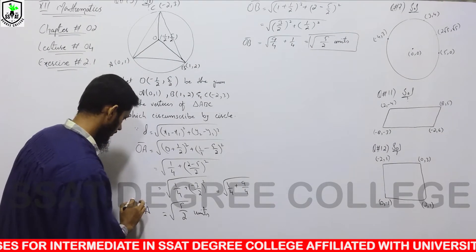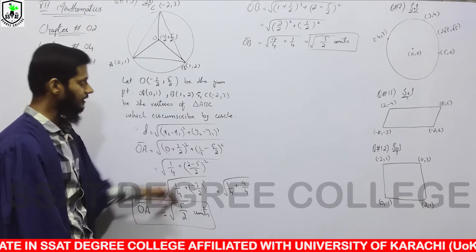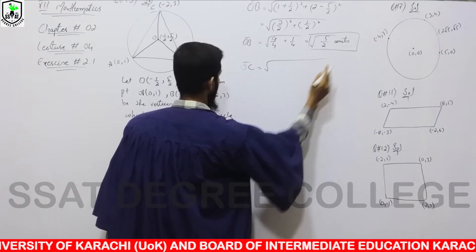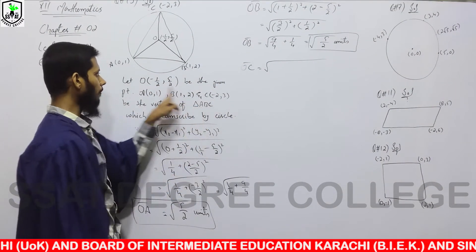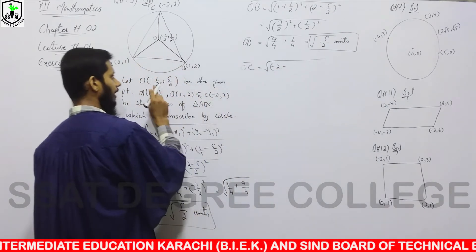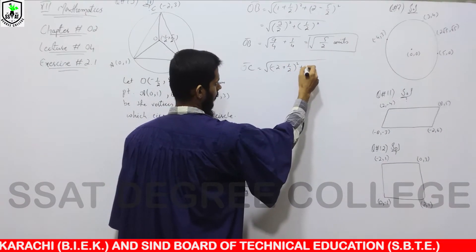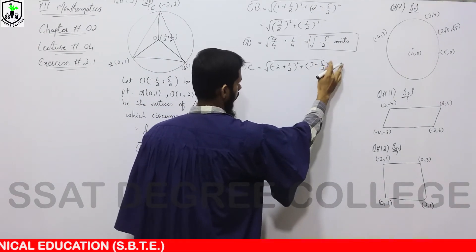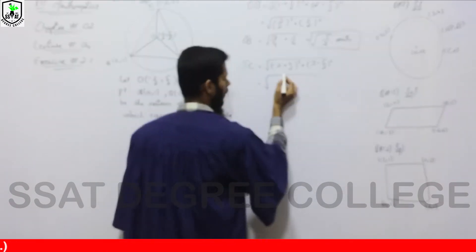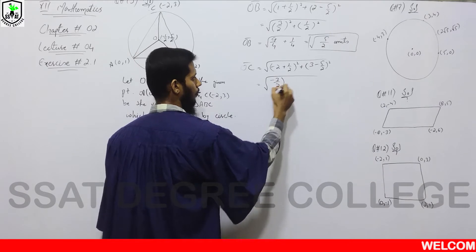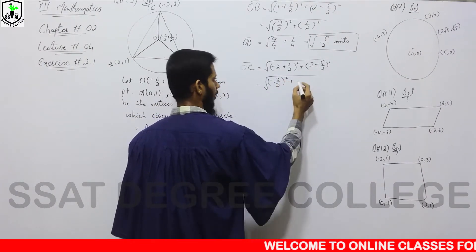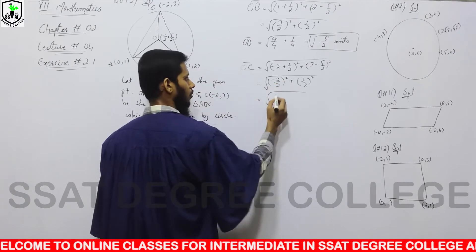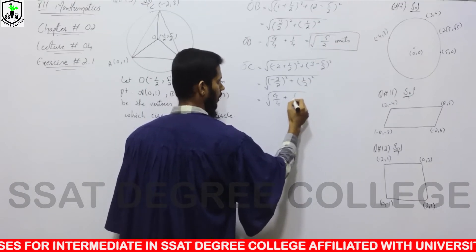Now O till C: O first point, C second point. O के coordinates x₁, y₁; C के coordinates x₂, y₂. x₂ − x₁: x₂ is −2, minus formula then x₁ itself negative, so it is positive = −3/2. Plus y₂ − y₁: y₂ is 3, minus y₁ is 5/2 = 1/2. So (−3/2)² + (1/2)²: 9/4 + 1/4 = 10/4. So OC = √(5/2) units.